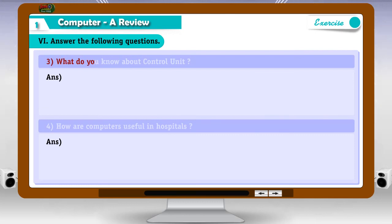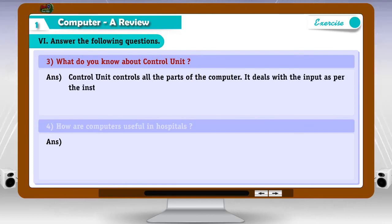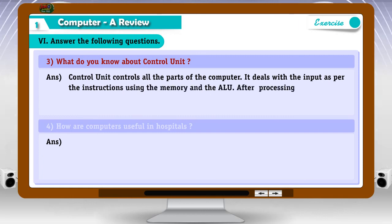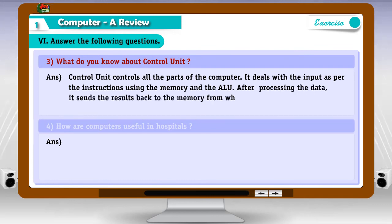3. What do you know about control unit? Answer. Control unit controls all the parts of the computer. It deals with the input as per the instructions using the memory and the ALU. After processing the data, it sends the results back to the memory from where they will be sent to the output device.